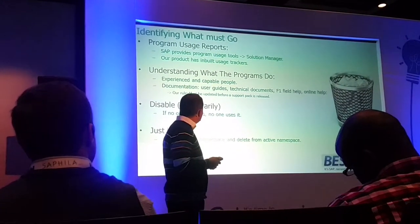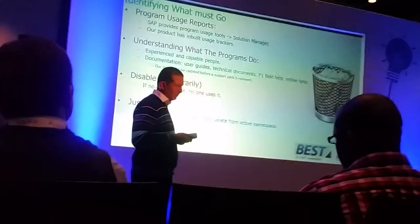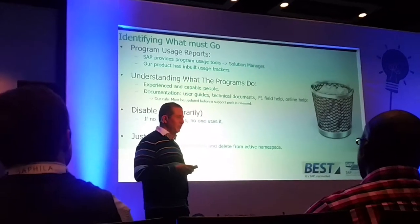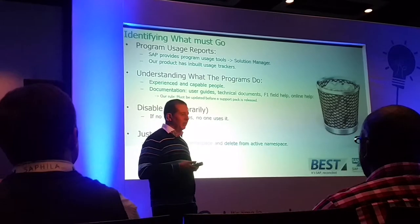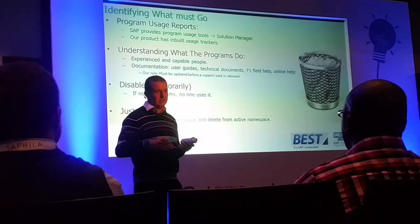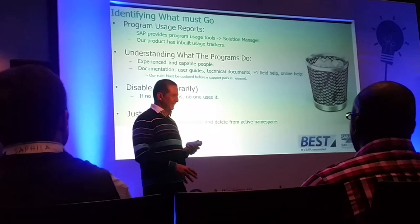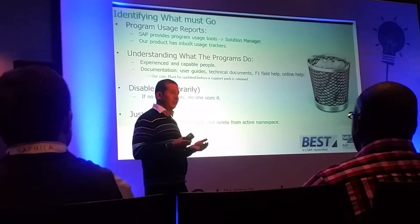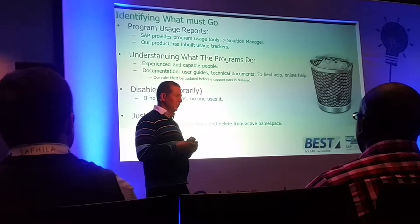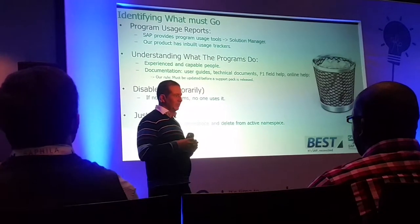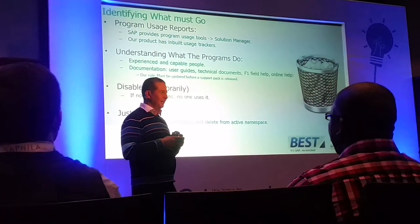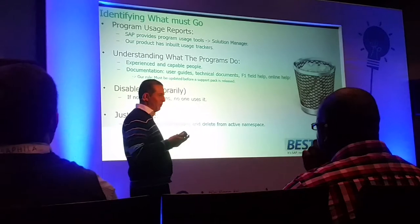Program usage reports — that's one way to check what's being used. Another way is at your site you've probably got people who've been there for a decade or two, and they know very well which programs are being used and which aren't. That kind of person could quickly go down the list and say, all of these are being used and these aren't. So there's that institutional knowledge. Documentation is very handy if you don't know what they do. And if you're not sure, you could always switch off that program, disable the transaction, and see if anyone squawks. And if they do, switch it back on — but in general they won't. We always copy our programs somewhere else just in case we ever need to code something similar.